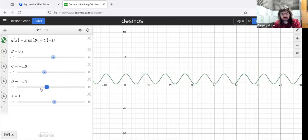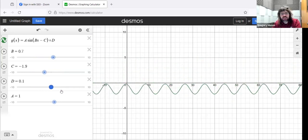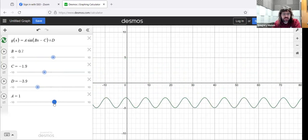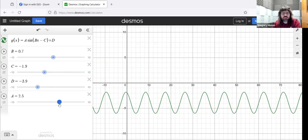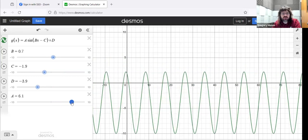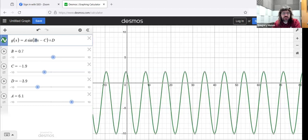Here, stuff moves vertically, but the period isn't changing. This stretches the curve, but it doesn't change the period. Only this B affects the period.